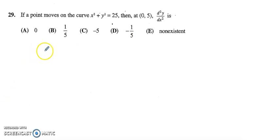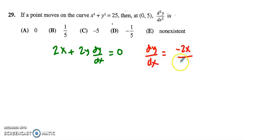For 29, they want the second derivative, so this is implicit differentiation. I differentiate x squared to 2x, y squared goes to 2y dy/dx, and 25 goes to 0. I can solve this for dy/dx by subtracting 2x from both sides, then dividing by 2y. So this derivative dy/dx is negative x over y.